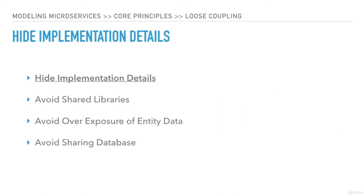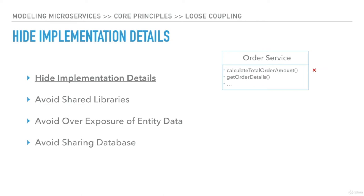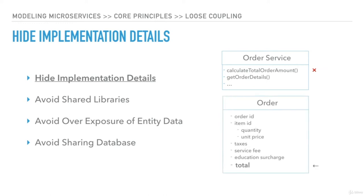Hide implementation details. Our order service has an API to calculate the total amount — but why should we expose it? This is internal implementation. If other APIs or user interfaces get hold of this API, they can misuse it or create unnecessary coupling. Instead of exposing this API, we should just calculate the total amount and update it in the order object while creating the order itself. This order object can be returned through the GetOrderDetails API as it was already happening.